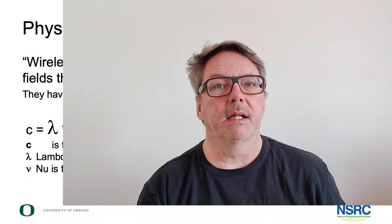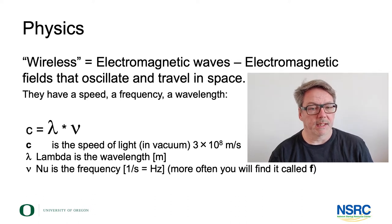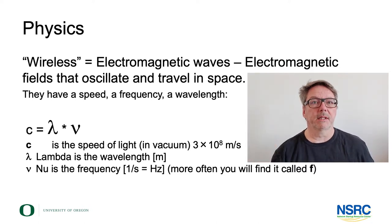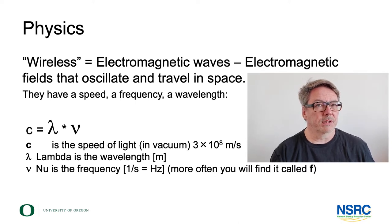Let's start with the physics. What is wireless? Essentially, wireless is a term we're using for electromagnetic waves — electromagnetic fields that travel in space and time. These waves have a frequency, a wavelength, and a speed. We typically call that speed the speed of light, because light is also just one of these electromagnetic waves. That speed of light is very fast: three times ten to the eighth meters per second.